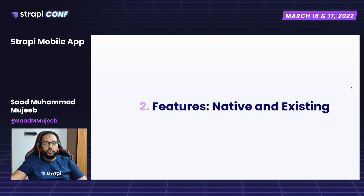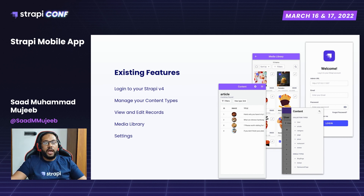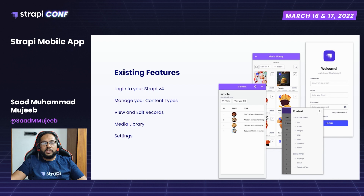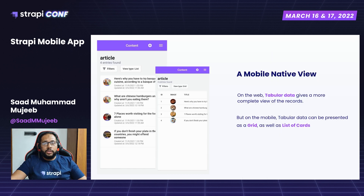In the existing features we have the login mechanism, content management, content type management, the ability to view, add, and edit records, the media library for managing and uploading media content, and settings with a whole range of options — everything you see on the web is available on mobile as well. We also have a few features that are native only to the mobile client.